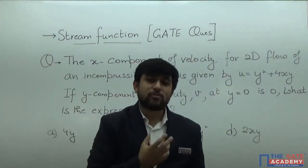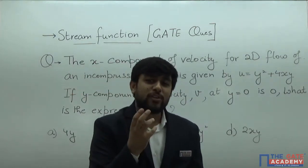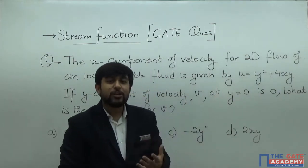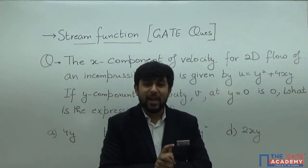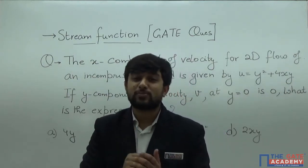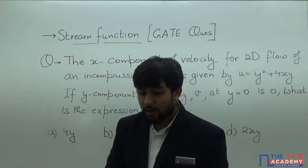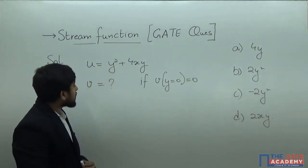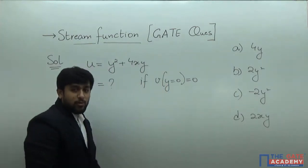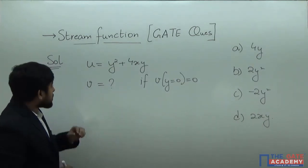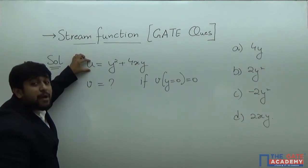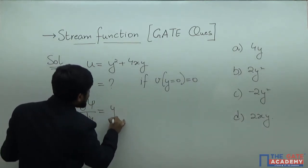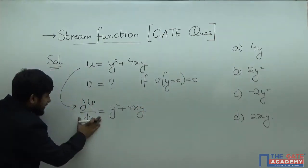We can solve this by continuity equation, but here I will solve it by stream function. Since del psi by del y is equal to u, by partially integrating u with respect to y I can get psi, and from psi I will find v by differentiating with respect to x. So del psi by del y equals y² plus 4xy. Let us take del y to the other side and integrate.